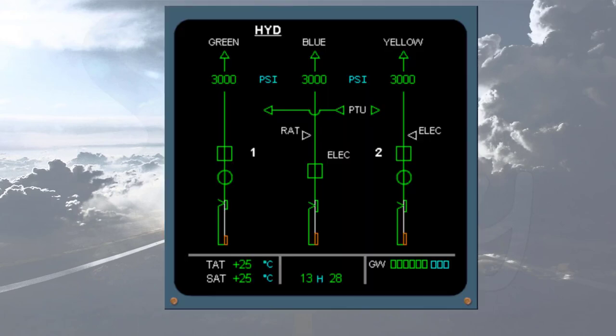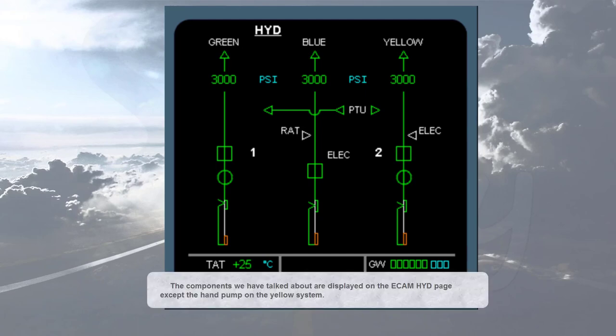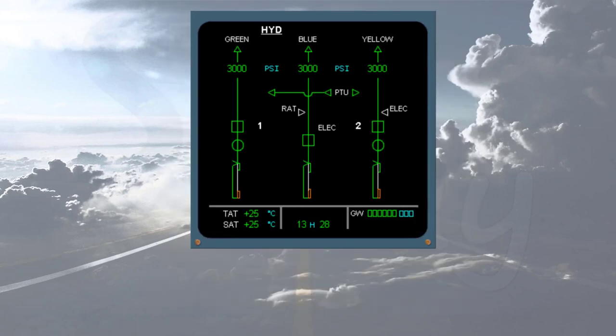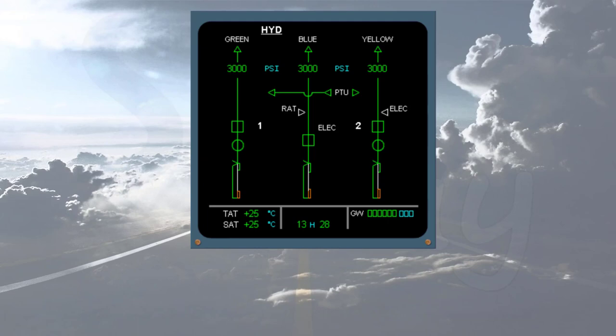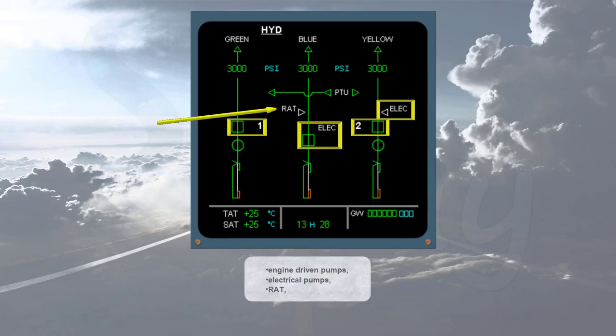The components we have talked about are displayed on the ECAM hydraulic page, except the hand pump on the yellow system. Let's briefly review the basic system using the ECAM hydraulic page: reservoirs, fire shutoff valves, engine-driven pumps, electrical pumps, RAT, PTU, and pressure indications.